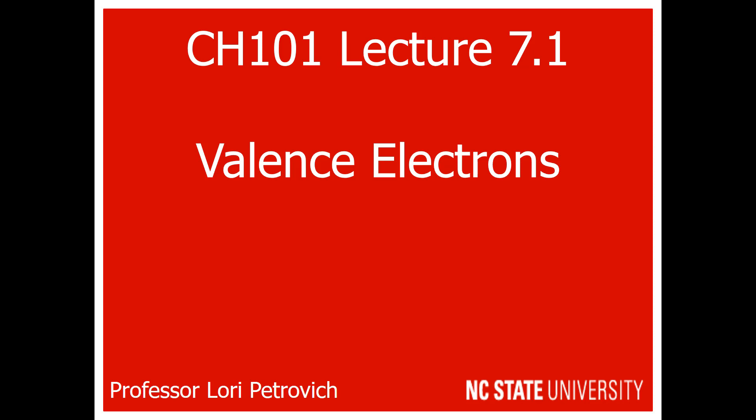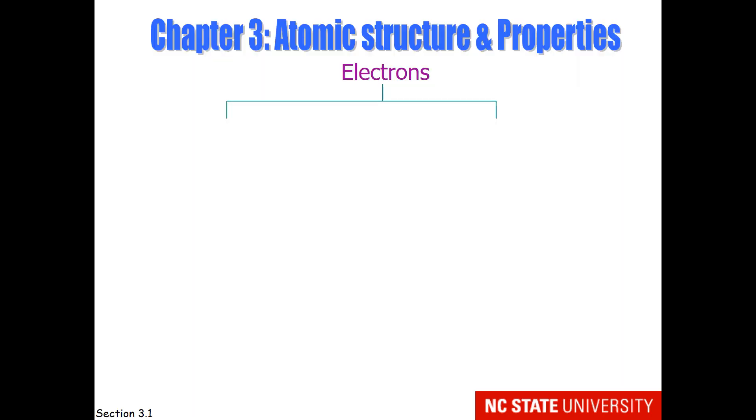The first part of Lecture 7 concerns valence electrons. We are now to Chapter 3, which covers atomic structure and properties. Electrons fall in one of two categories.